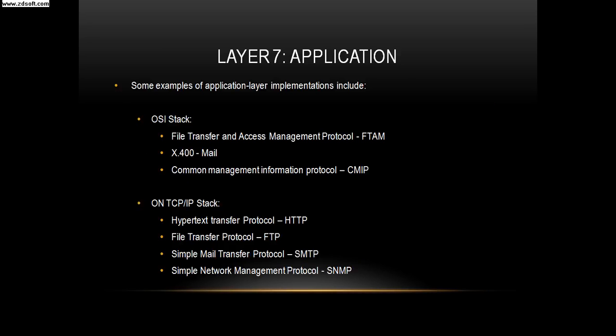Some examples of application layer implementations include, on the OSI stack: file transfer and access management protocol, X.400, and common management information protocol. On the TCP/IP stack: hypertext transfer protocol, file transfer protocol, simple mail transfer protocol, and simple network management protocol.